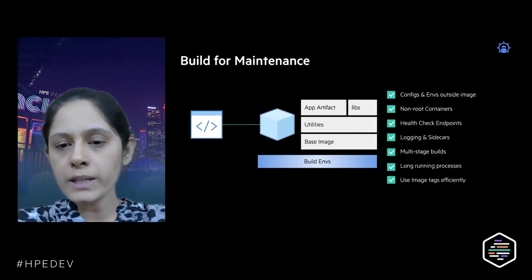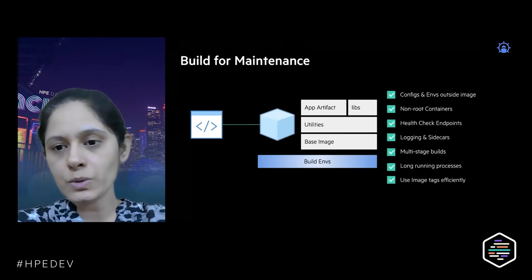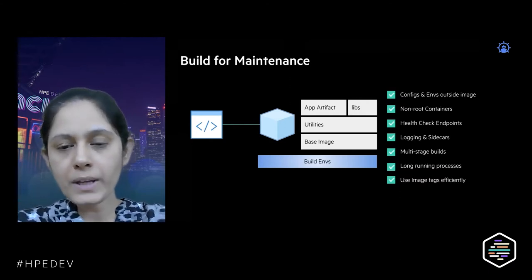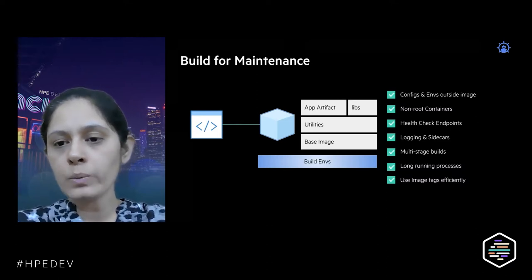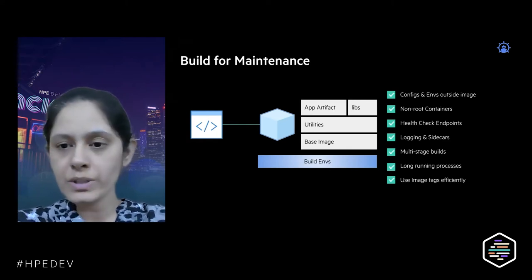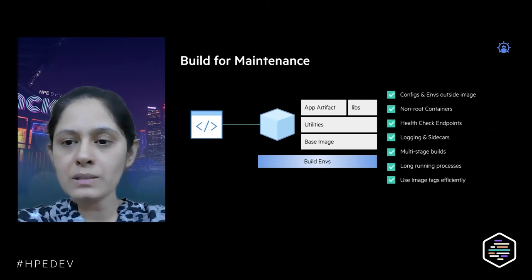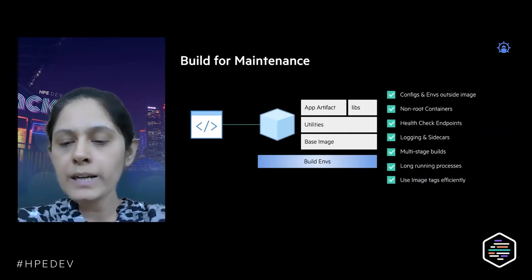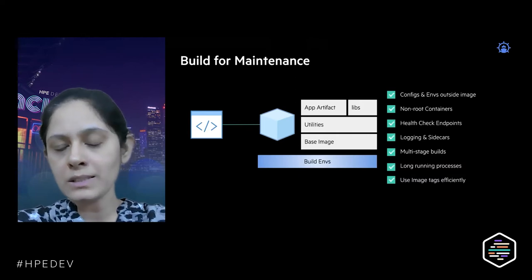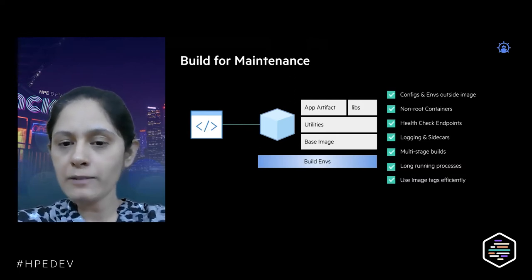It's better to keep certain configurations outside the images so we can redeploy the same image across different environments. We should also consider security aspects right from day one — what happens when we have to run containers as a non-root user. Things may change the moment we introduce security contexts in a deployment. If we want to run as a specific user, some volume mounts may stop working, so we need to consider these security aspects from day one.